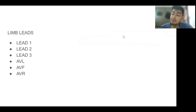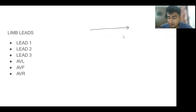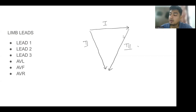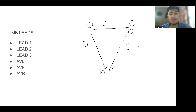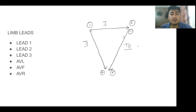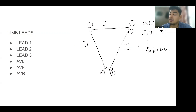Initially when the ECG was developed, three leads were produced. Lead 1 has a negative electrode in the right upper limb and a positive electrode in the left upper limb. Lead 2 has a negative electrode in the right upper limb and a positive electrode in the left lower limb. Lead 3 has a negative electrode in the left upper limb and a positive electrode in the left lower limb. These initial three leads are all bipolar leads.